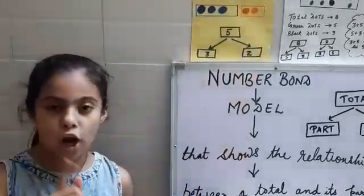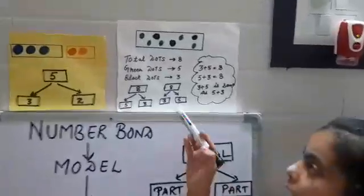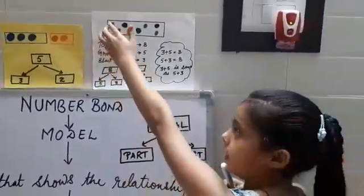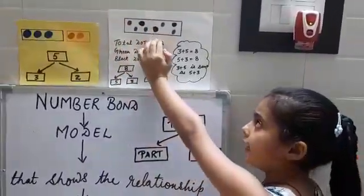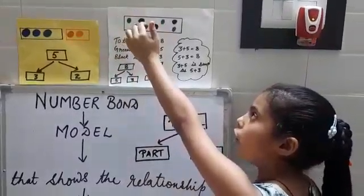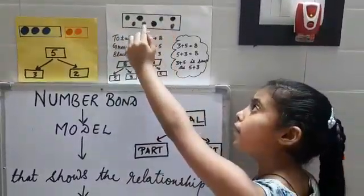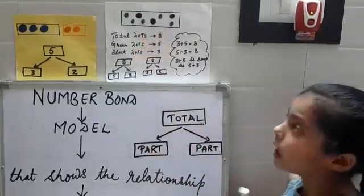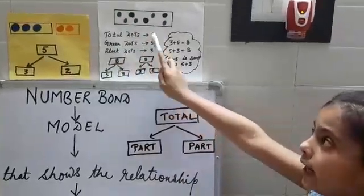I will give you another example. Here are the total dots. There are five green dots and three black dots. The total dots are eight.